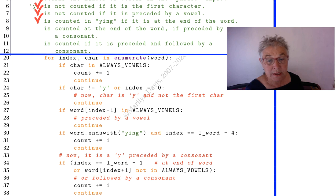We already know it's preceded by a consonant from what happened before. It is counted if it's at the end of the word and it is preceded by a consonant. So we already know that it is preceded by a consonant. But is it at the end of the word? Well, this will tell us.